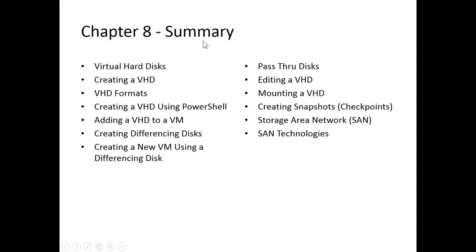Chapter 8 Summary: in this chapter we discussed virtual hard disks, creating a virtual hard disk, virtual hard disk formats, creating a virtual hard disk using PowerShell, adding a virtual hard disk to a virtual machine, creating differencing disks, and creating a new virtual machine using a differencing disk. We looked at pass-through disks, editing a virtual hard disk, mounting a virtual hard disk, creating snapshots (also called checkpoints), storage area networks, and storage area network technologies. This concludes Chapter 8. Thank you very much, and have an awesome day.